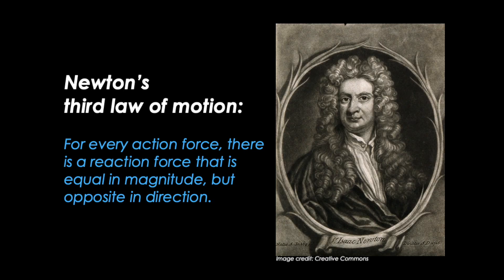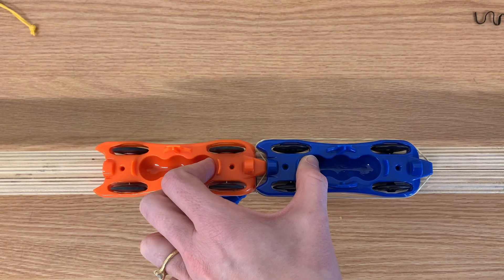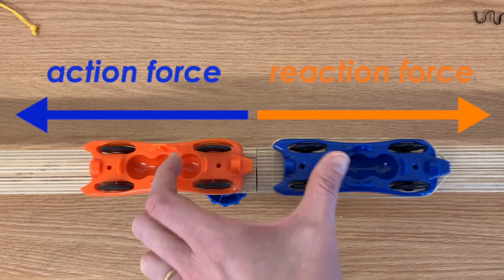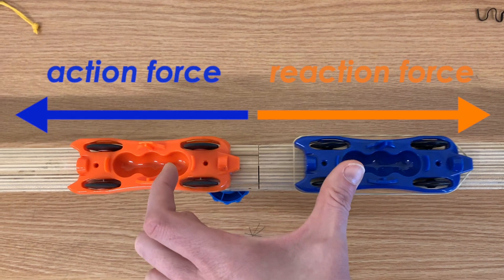This is predicted by Newton's third law of motion. For every action force, there is an equal and opposite reaction force. The rubber band's force is the action force. The orange car's force is the reaction force.